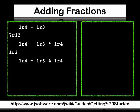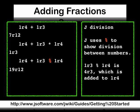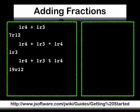J uses the percent sign to show division between numbers. 1 third divided by 1 quarter is 4 thirds, which is added to 1 quarter, producing 19 twelfths.